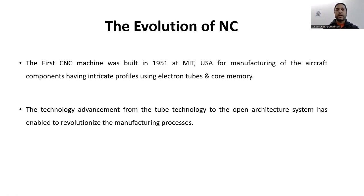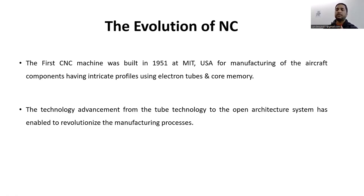The Servomechanism Laboratory of MIT was the subcontractor at that time, but later in 1951 MIT took over the complete job. In 1952, the prototype of today's NC machine was successfully demonstrated. The term 'NC' — Numerical Control — originated at MIT. After that, technology advancement from tube technology to open architecture systems revolutionized manufacturing processes.